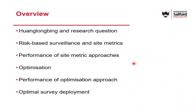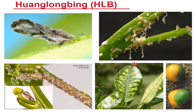I haven't got a huge amount of time so it's going to be a whirlwind tour of this paper. I'm going to start by quickly describing the disease we're focusing on — Huanglongbing — and our research question, then talk about risk-based surveillance and the use of site metrics, and then go on to how we talk about optimisation, how this performs and what it can tell us about optimal survey deployment.